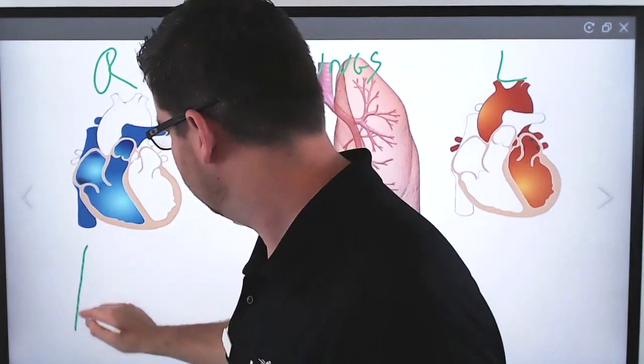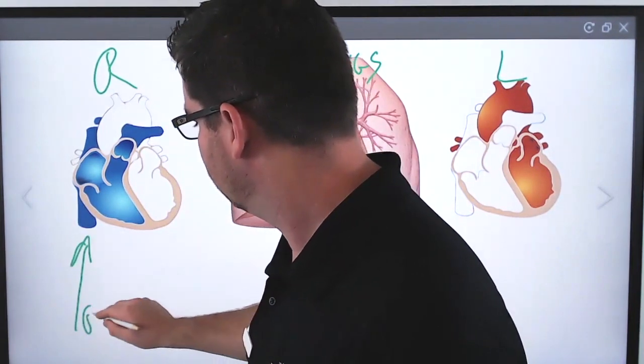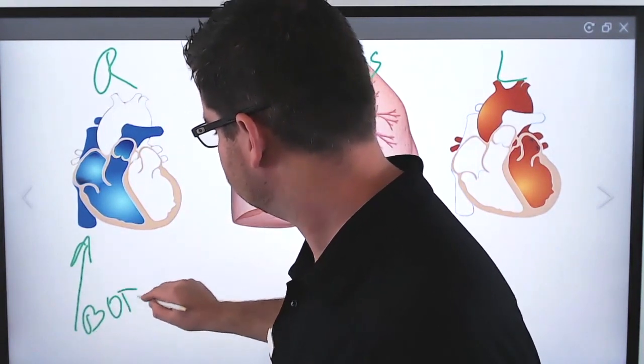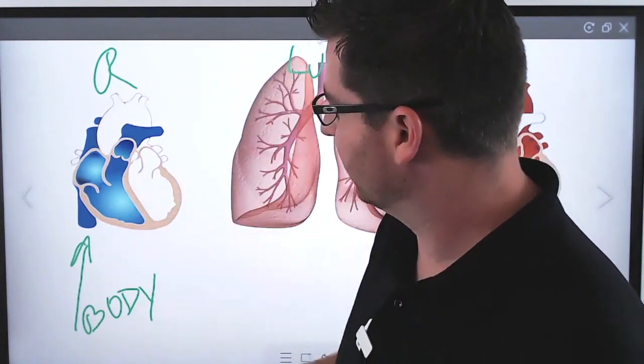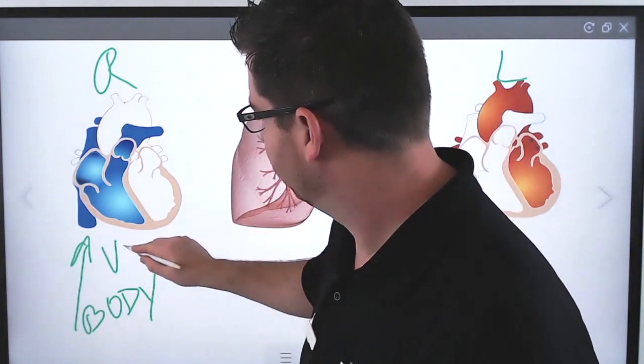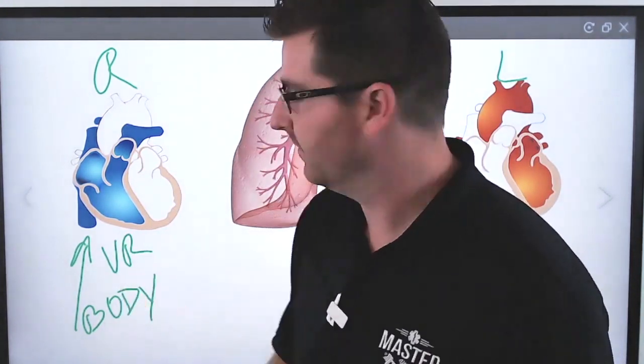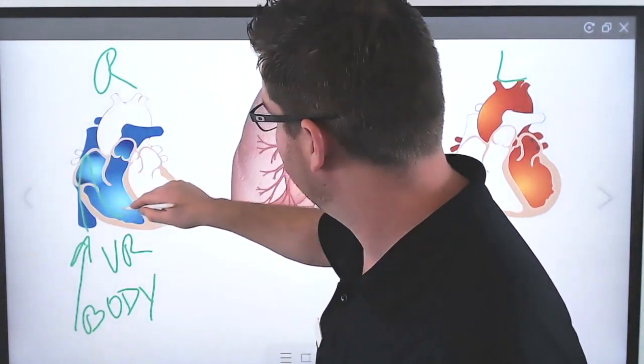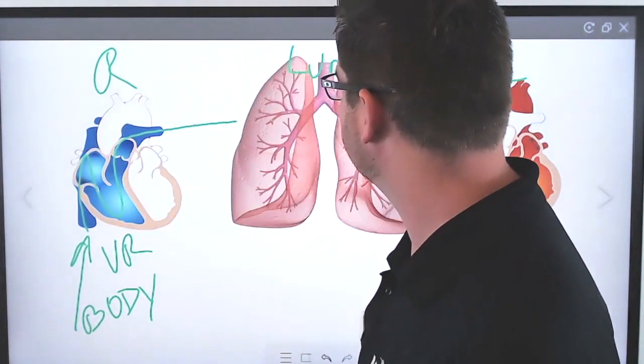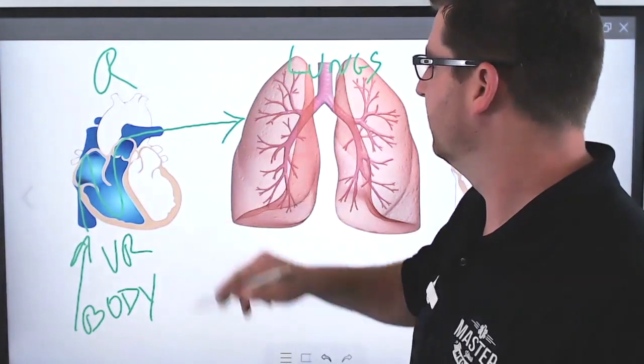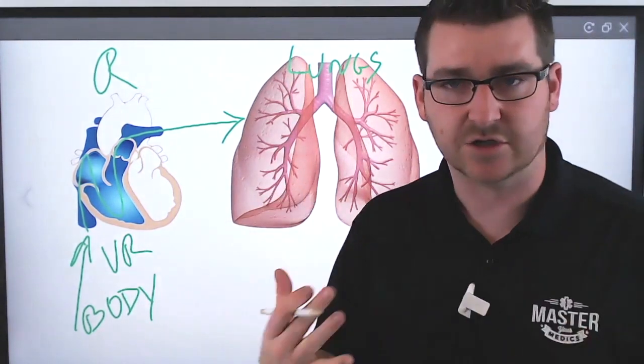The body returns blood to the heart on the right side, and that's called venous return or VR. It's going to go up through there and then through the right ventricles into the lungs. In the lungs, we do our oxygen and CO2 exchange.